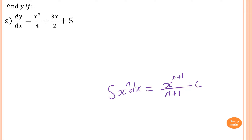Now, to integrate this, we write y equal, so x to the power of 3 — we add 1, so it becomes x to the power of 4. And this over 4 here, we just write it out, so now you divide by the power, which is divided by 4, which is the same as times by a quarter.